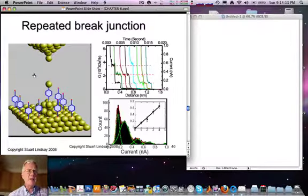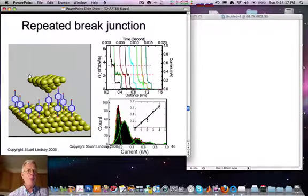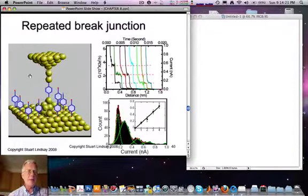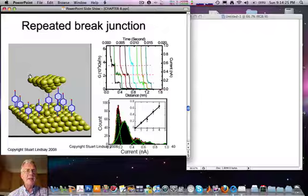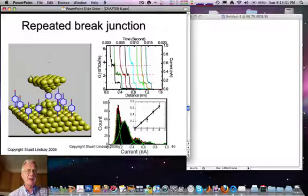the gold is relatively more plastic than the molecule. And so once a molecule bridges the gap, the act of pulling the probe away from the surface causes the current to be dominated just by the molecule for a significant distance over which this gap is pulled.